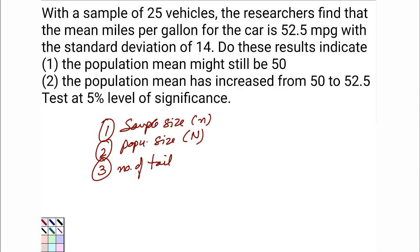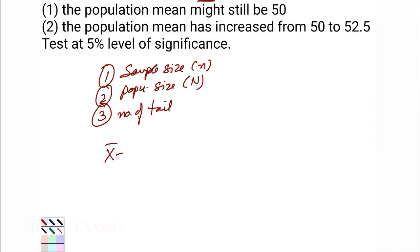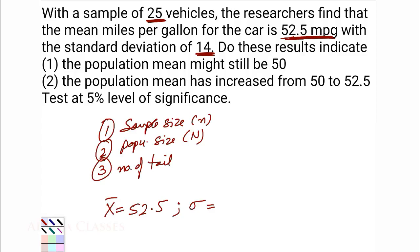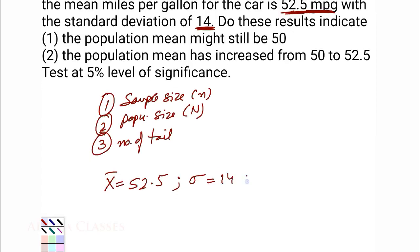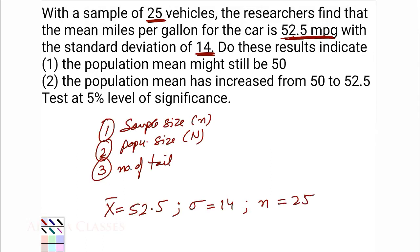First let us read this question. With a sample of 25 vehicles, the researcher finds that the mean miles per gallon for the car is 52.5 miles per gallon with a standard deviation of 14. The opening line is talking everything about the sample, so this mean and standard deviation are also related to the sample. So x̄ = 52.5 miles per gallon, standard deviation S (sample) = 14, and small n = 25.